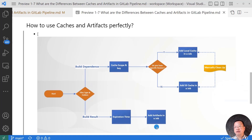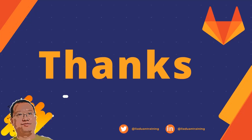Our topics are completed. Today we learned what the difference is between cache and artifacts in the GitLab pipeline, how to make a decision on when to use cache, and how to use file type to decide whether to use cache or artifacts in your jobs. Thank you, and see you in the next video.